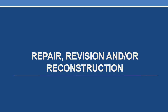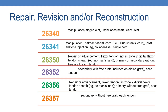Now coming to repair, revision or reconstruction. The first CPT is 26340: manipulation, finger joint under anesthesia, each joint. And for manipulation of palmar fascial cord — for example, Dupuytren's cord — post enzyme injection, single cord, it is reported with 26341.